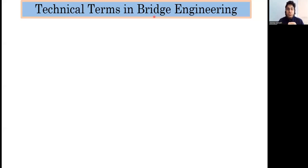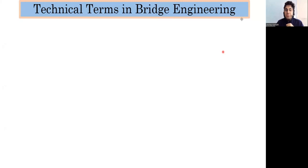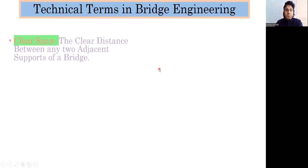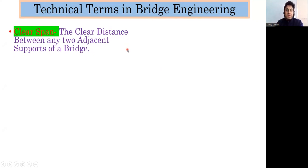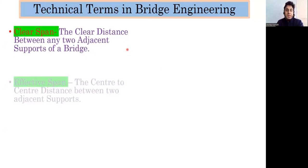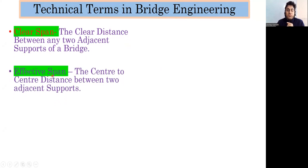Hello, dear students, welcome back to the lecture. In this lecture we'll look at certain basic terms in bridge engineering. The first is clear span — the clear distance between any two adjacent supports in a bridge is called the clear span.